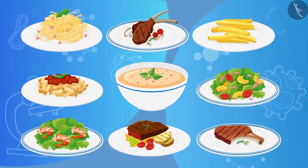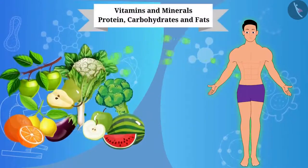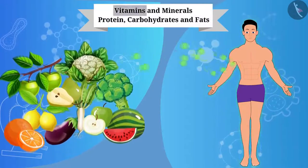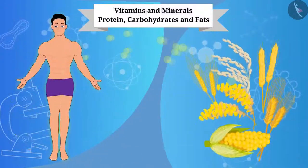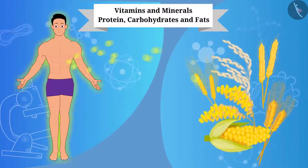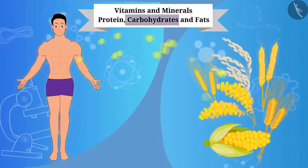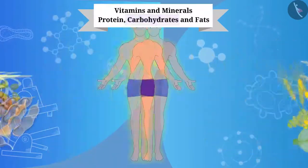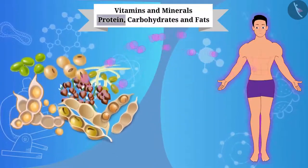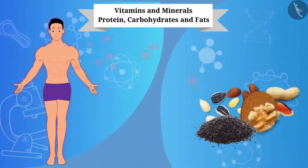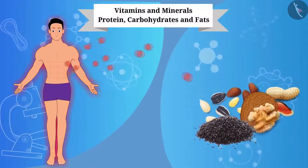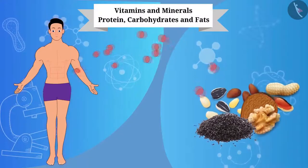Vegetables and fruits provide a small amount of protein, carbohydrates and fats in addition to vitamins and minerals. Grains like wheat, rice and maize provide us with carbohydrates for our energy needs. Pulses like gram, pea, black gram provide protein. And soybean, brown nut, oil seeds including sesame, provide essential fats.